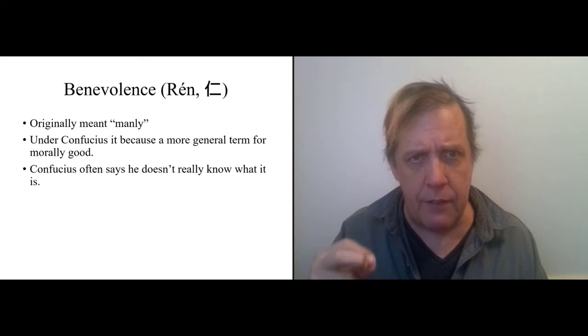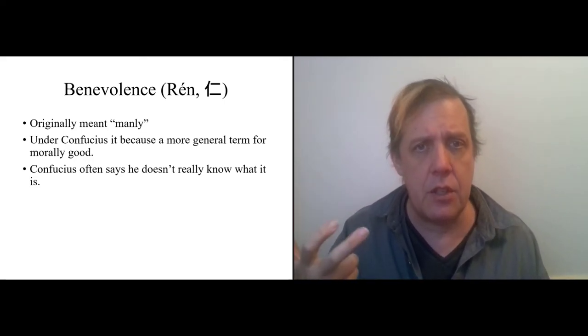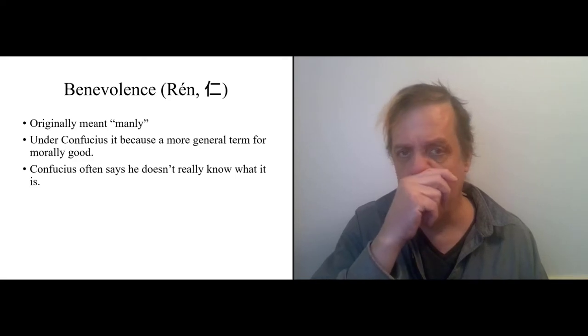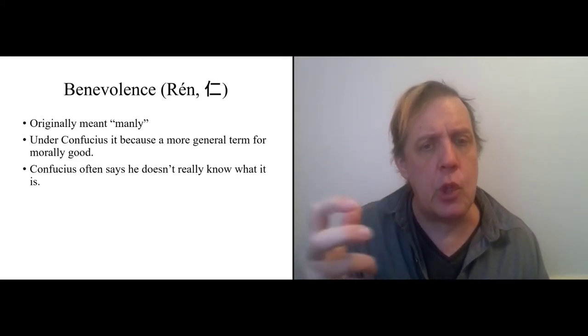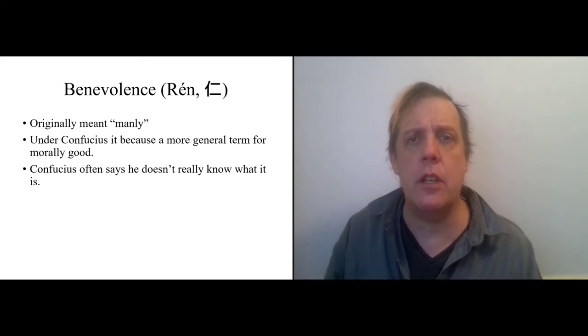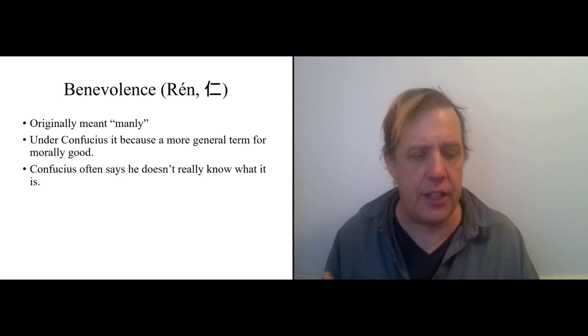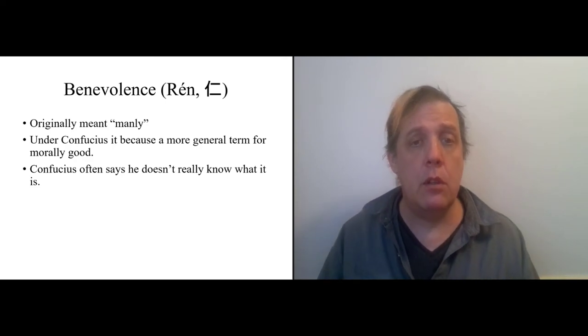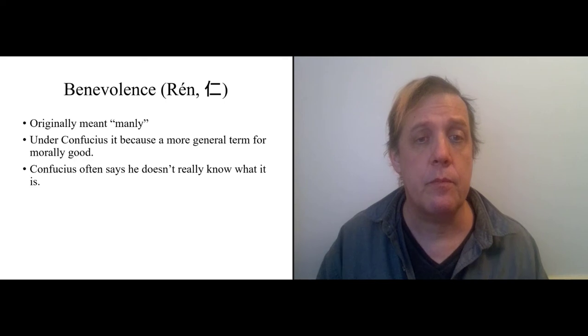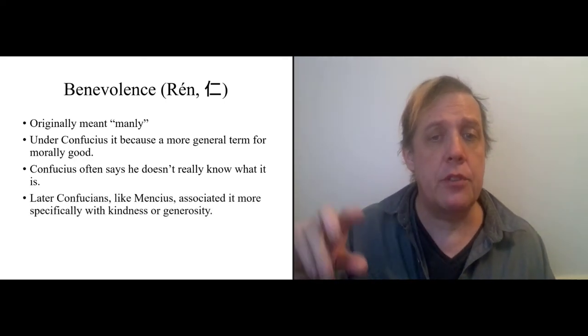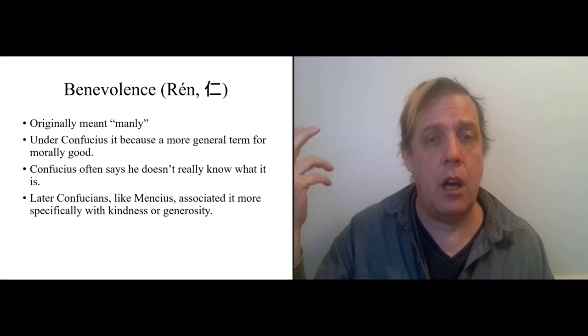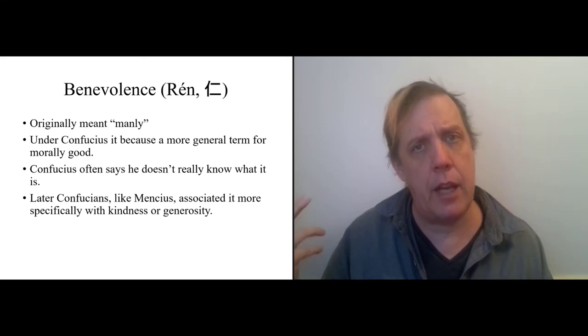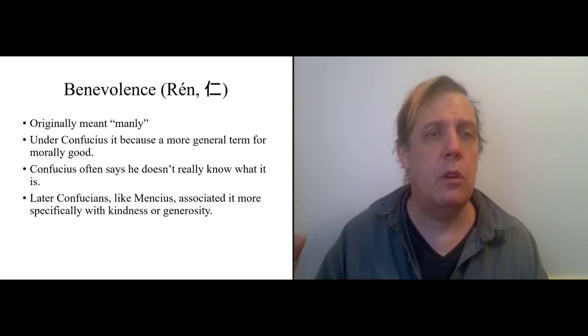And so Ren becomes a term for people who are morally good in general. There's a narrowing after Confucius, particularly with Mencius. Confucius uses benevolence or Ren as such a term of respect that sometimes he says, I don't even know what real goodness is. But that's what I'm still looking for. Confucius is really consistently honest in his self-appraisal. He'll talk about what he knows and what he doesn't and what he's still trying to learn.